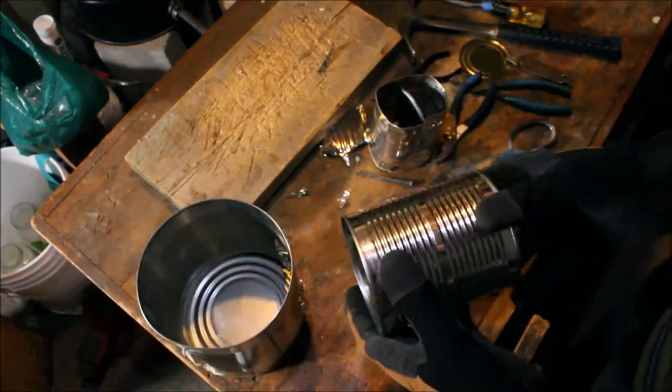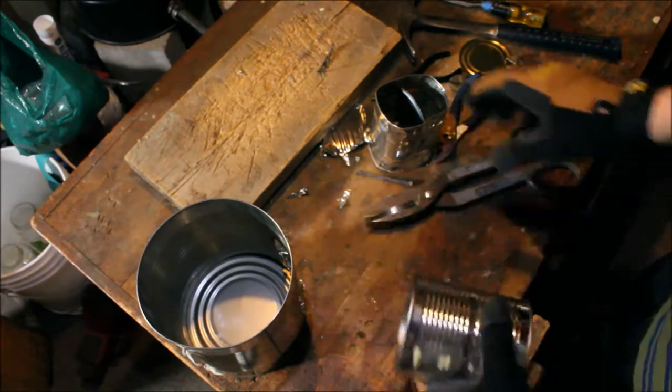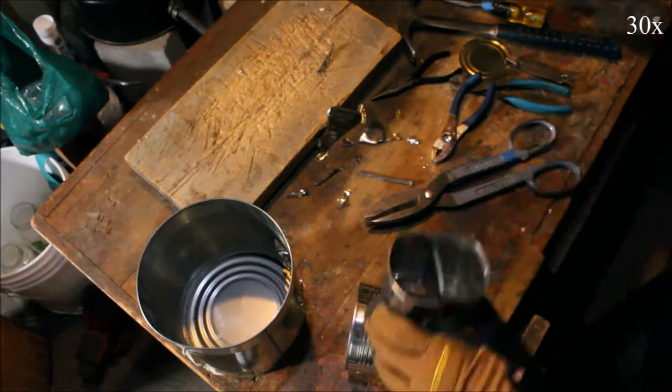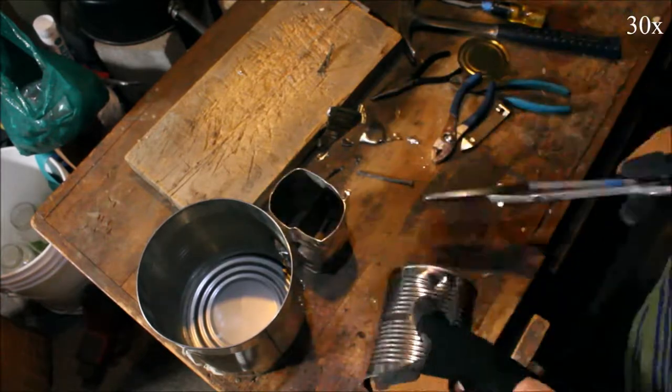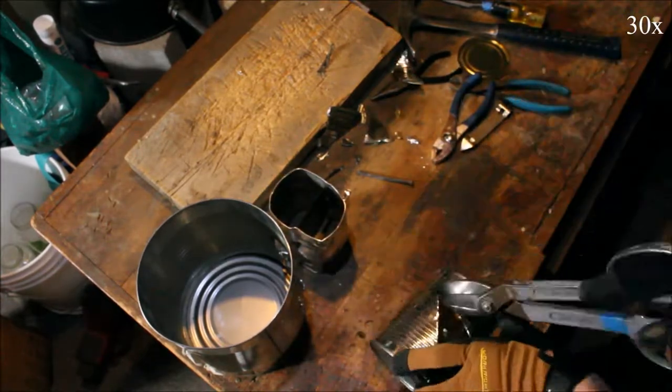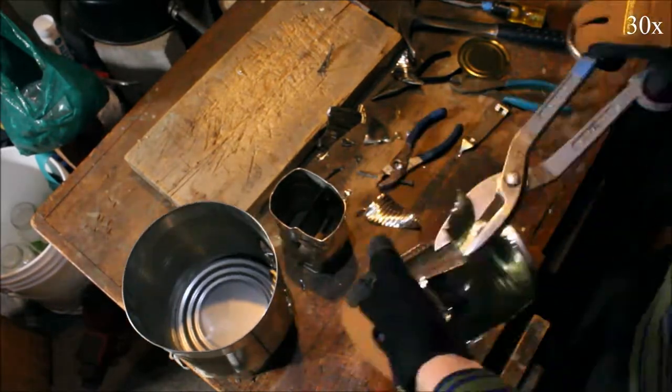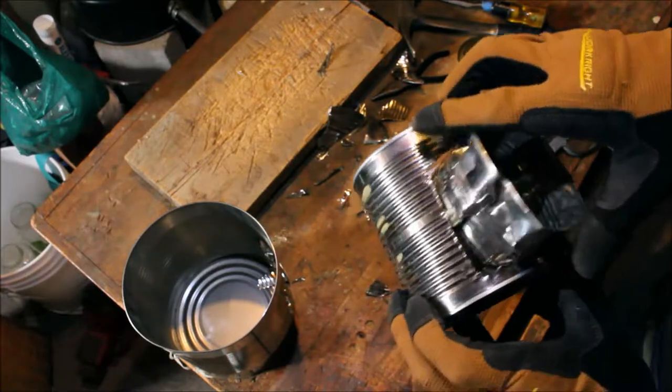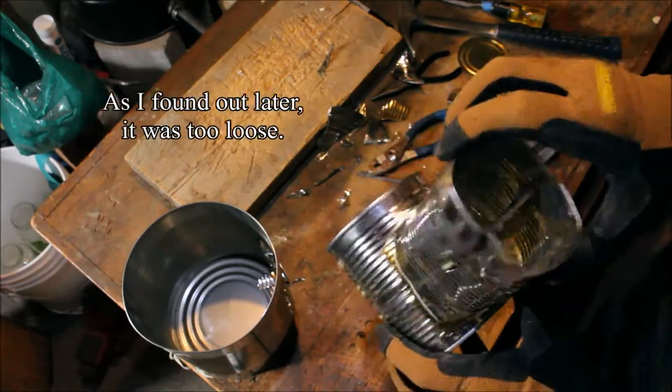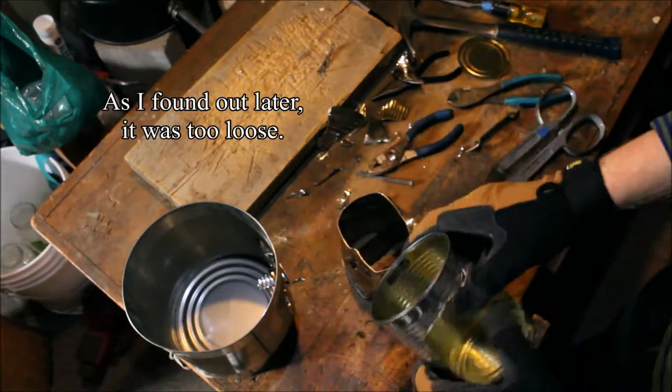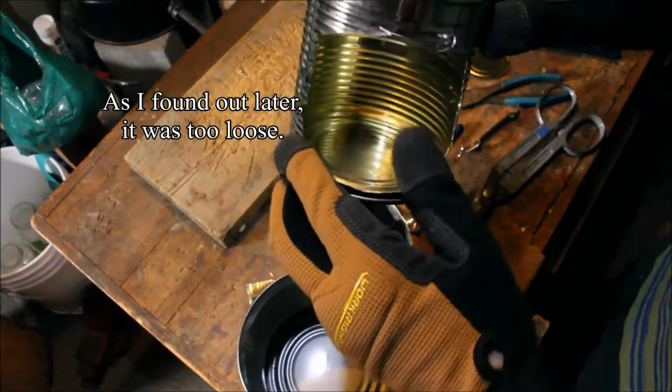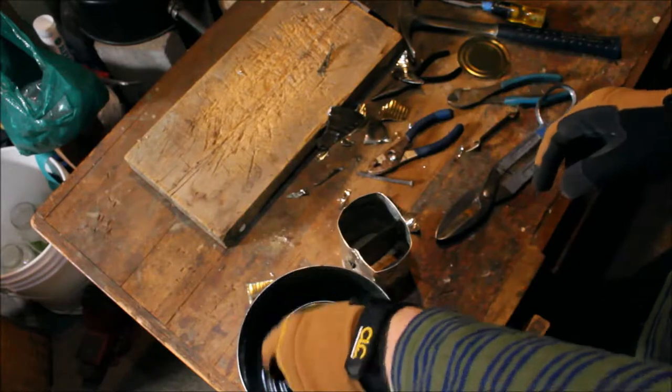So the next step is doing the same with this second can. So that works well. And you don't have to pull these edges in since it will be hidden inside of this one.